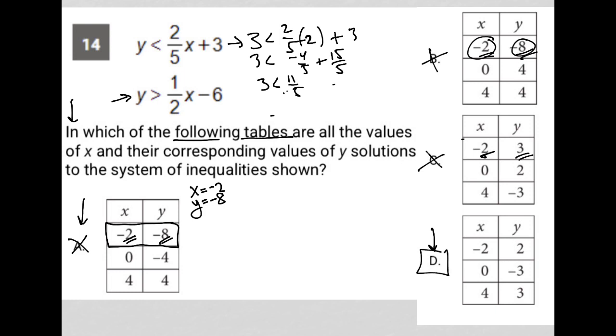But let's just test it out to be certain, make sure we didn't make an error somewhere else. So is it true that negative 2 comma 2 is a possibility? So when I plug that in, I get 2 less than 2 fifths times negative 2 plus 3. We should know by now that that ends up being 2 is less than 11 fifths, which is correct.